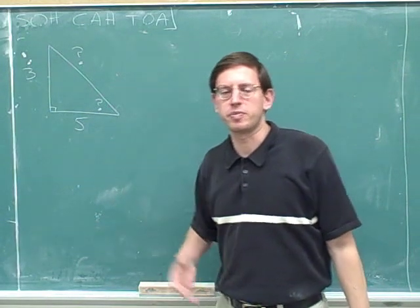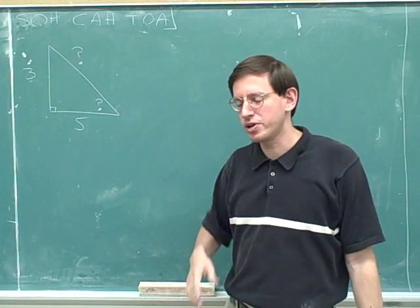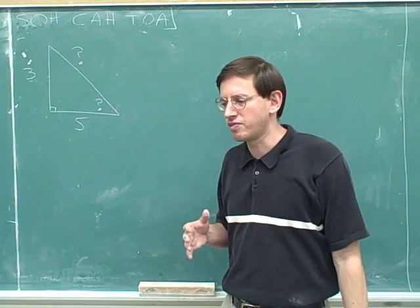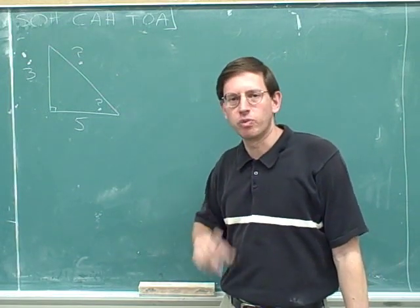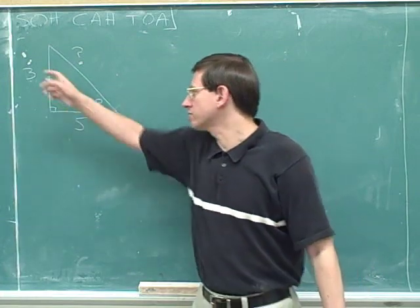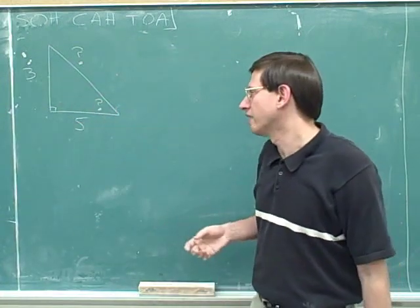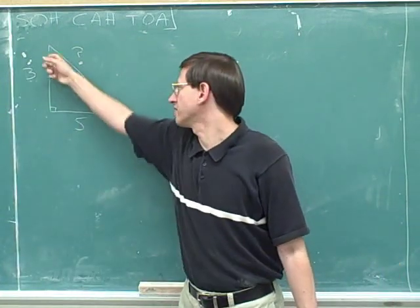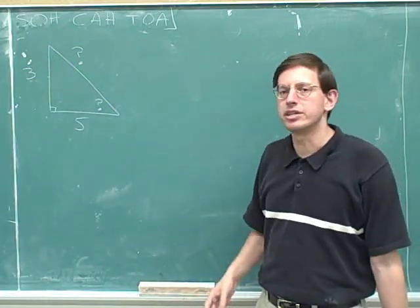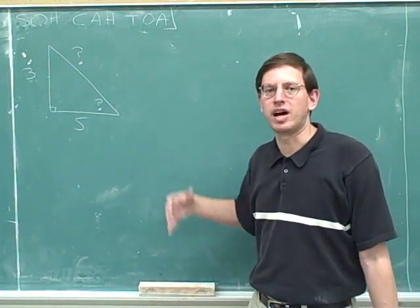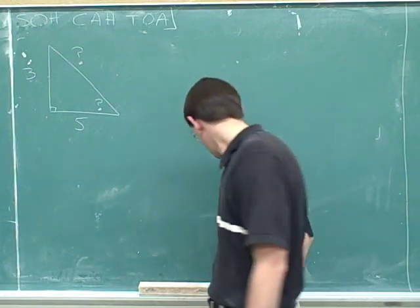Can you see that this problem is different from the previous problems? In the previous problems, I was giving you one side and one angle. But here I'm just giving you two sides and no angles. Of course, you always know the right angle, but we're not given either of the other two angles. So now we have to learn how to solve a problem when we're just given two sides.